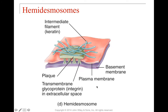We also have a hemidesmosome, which is basically just one half of a desmosome. This is when we're going to connect to something like a basement membrane. When we talk about organization of cells, we often orient ourselves by locating the basement membrane. So if we're connecting from a cell to a basement membrane rather than cell to cell, we'd have a hemidesmosome. Inside the cell, we'd have the intermediate filament connected to a plaque, which connects to an integrin — instead of cadherins — connecting to a transmembrane glycoprotein in the extracellular space.